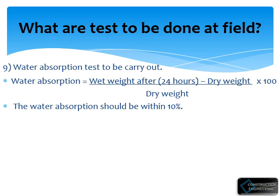Ninth, we have to check the water absorption. It is carried out for 24 hours. We record the initial dry weight, then keep the block in water for 24 hours and weigh it again. The water absorption formula is: (wet weight after 24 hours minus dry weight) divided by dry weight, multiplied by 100. The water absorption should be within 10 percent.